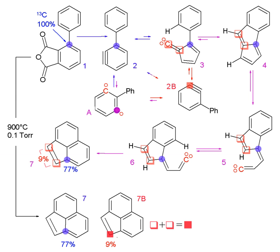Stable isotope labeling involves the use of non-radioactive isotopes that can act as tracers used to model chemical and biochemical systems. The chosen isotope acts as a label that can be identified through nuclear magnetic resonance and mass spectrometry. Some of the most common stable isotopes are 2H, 13C, and 15N, which can be produced into NMR solvents, amino acids, nucleic acids, lipids, common metabolites, and cell growth media.